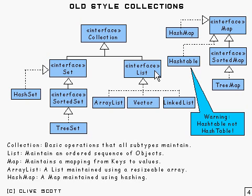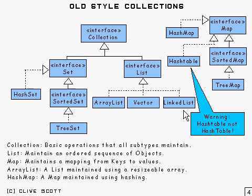You produce something of type list and choose which class you want to implement it. There are trade-offs between the various types. ArrayList and Vector are roughly the same — in both cases they're stored in arrays. LinkedList is just a linked list, which lets you go from one item to the next very easily. With Vector and ArrayList you can also get to the nth item very quickly because they're stored in an array.